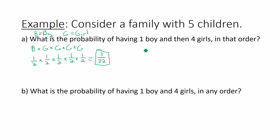Now what's the probability of having one boy and four girls in any order? Well, that means the boy could be the first one born. That means the boy could be the second one born. The boy could be the third one born. And if you haven't picked up on the pattern yet, the boy could be the fourth one born.